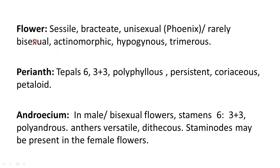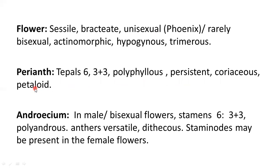Flowers are small, sessile, bracteate, and unisexual — for example, in Phoenix. Rarely it may be bisexual. It is regular, that is actinomorphic, hypogynous, and trimerous. In monocotyledons, the calyx and corolla are undifferentiated, and such a whorl is called as the perianth. The members of the perianth are called as tepals. Here the tepals are six in number, arranged in two whorls of three each, so referred to as 3+3. They are free, so it is polyphyllous, persistent, and leathery — referred to as coriaceous — and being colored, it is called as petaloid.